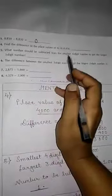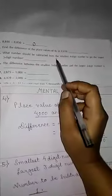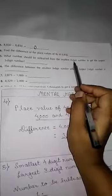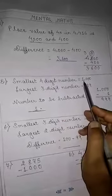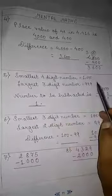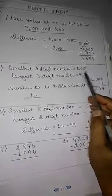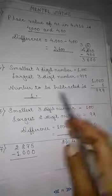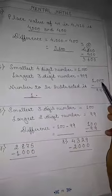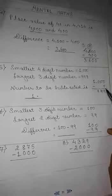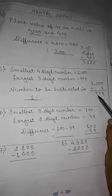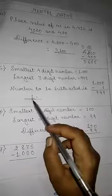Fifth bit: what number should be subtracted from the smallest 4-digit number to get the largest 3-digit number? The smallest 4-digit number is 1000, and the largest 3-digit number is 999. The number to be subtracted is 1000 minus 999, which means you subtract 1 from 1000 to get 999. Our required answer is 1.